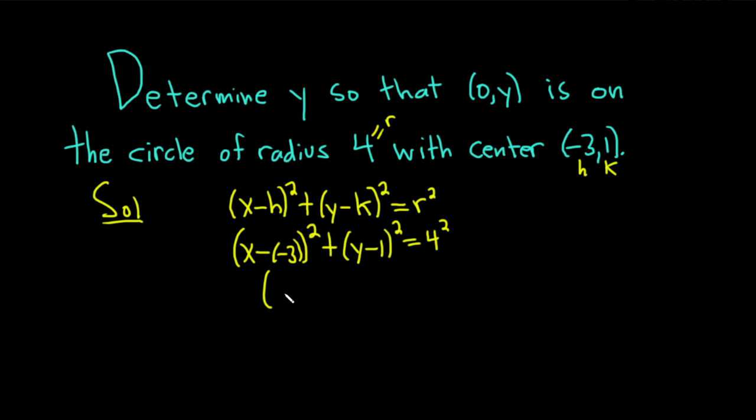Let's clean it up. The double negative becomes a positive, so we get (x + 3)² + (y - 1)² = 16. Points that satisfy this equation are on the circle.